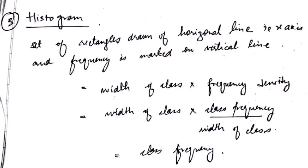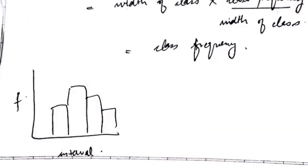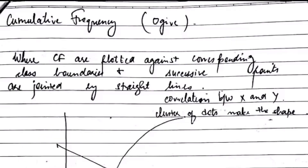Next is histogram. It is a set of rectangles drawn on a horizontal line, that is the x-axis, and frequency is marked on the vertical line. The width of the class is multiplied with the frequency density.